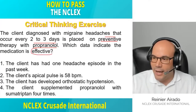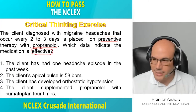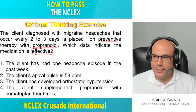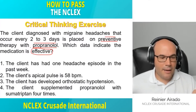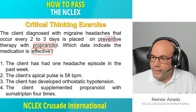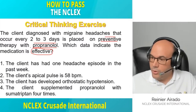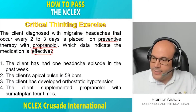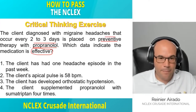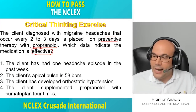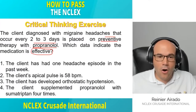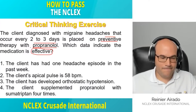We're looking for an answer that tells us the patient is better. The answer choices are: one, the client has had one headache episode in the past week; two, the client's apical pulse is 58 beats per minute; three, the client has developed orthostatic hypotension; four, the client supplemented propranolol with sumatriptan four times.